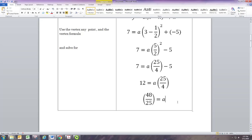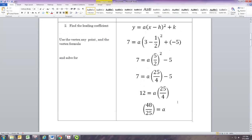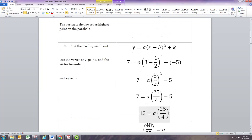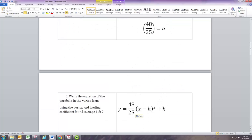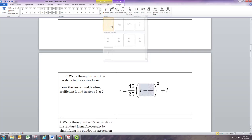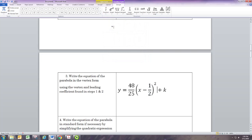So 48/25 is the leading coefficient. Now we can go back and write the vertex form of the equation because we know a: 48/25, and we know h is 1/2 and k is negative 5. So there is the equation for the parabola.